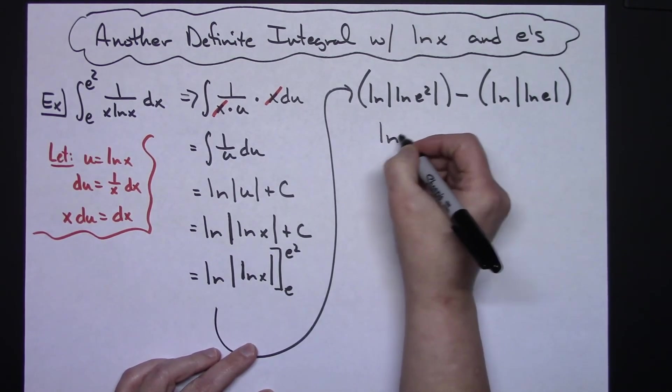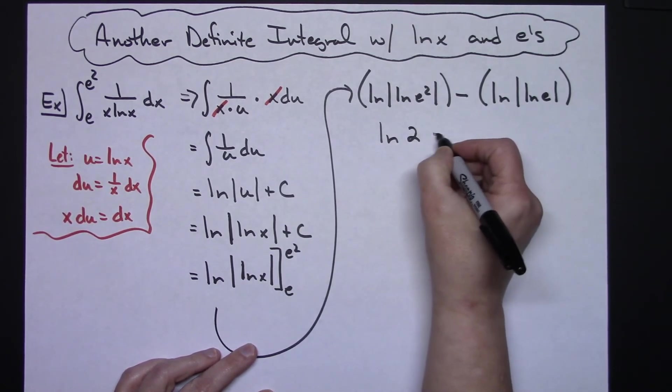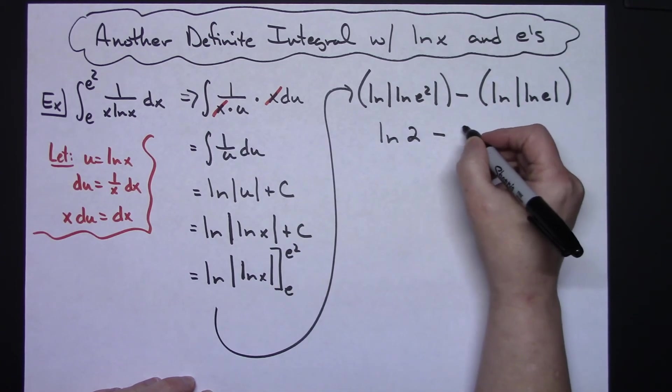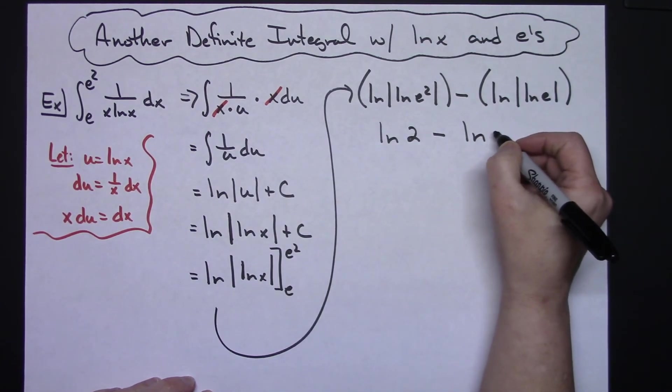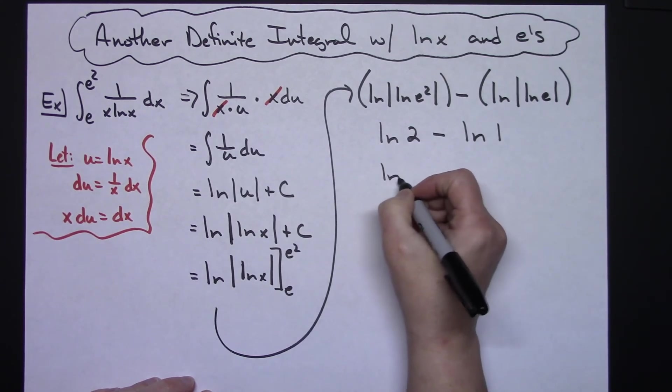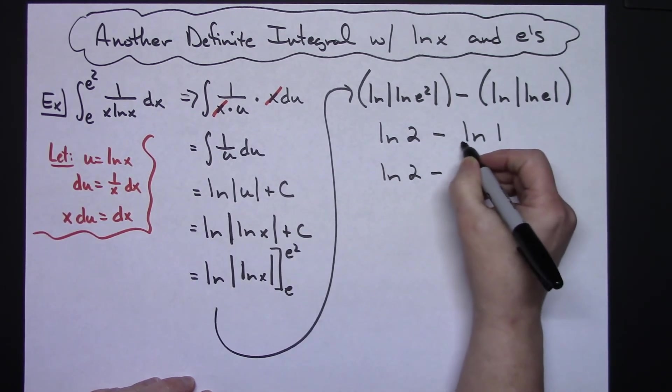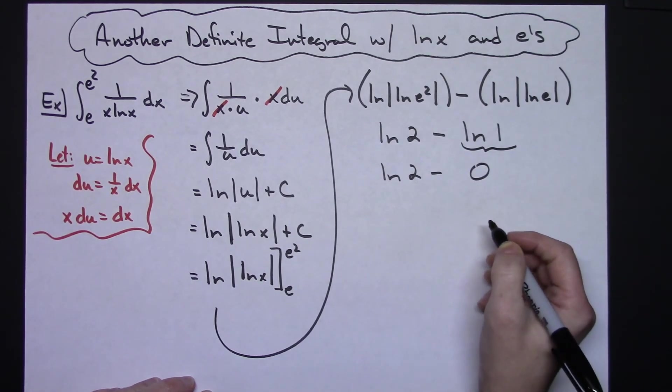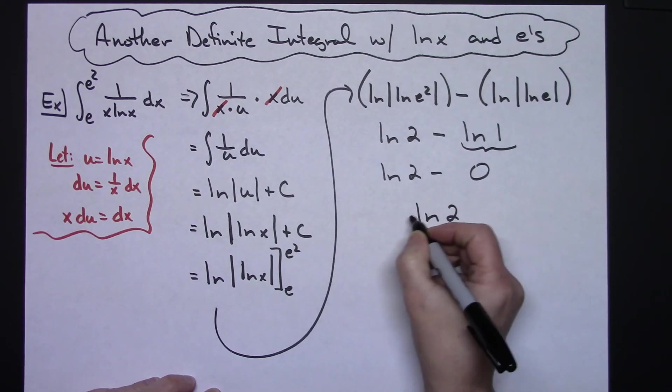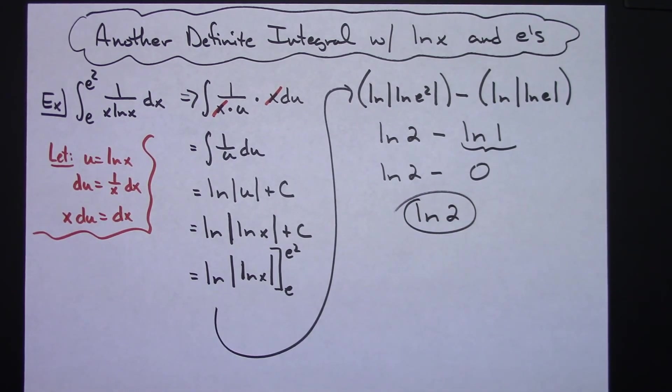And then minus, I have just a simple natural log of e. Natural log of e is one, so I'm going to have natural log of one. Natural log of two minus natural log of one, which is zero, so this simplifies all the way down to natural log of two.